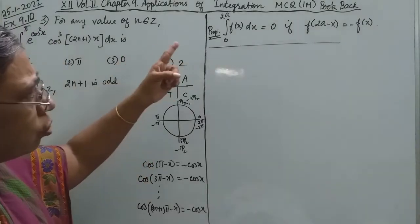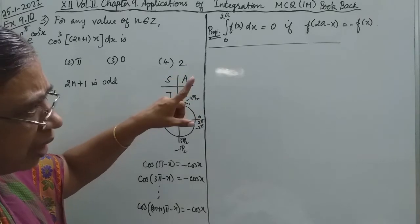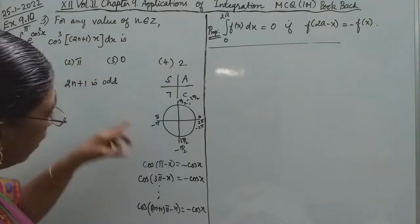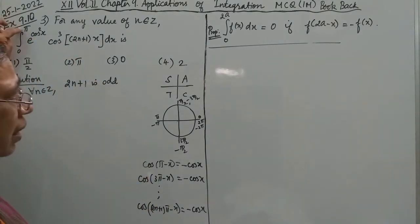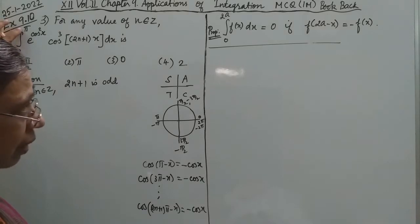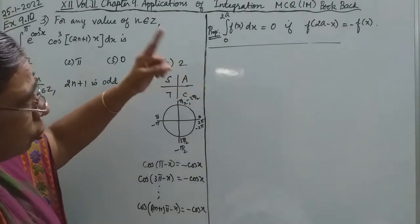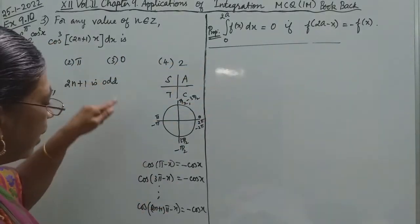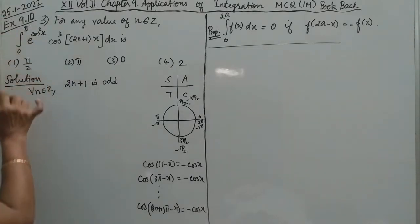Actually which property are we going to use? The integral from 0 to 2a of f(x)dx equals 0 if f(2a-x) = -f(x). We can see that 2a = π. Upper limit is π only.